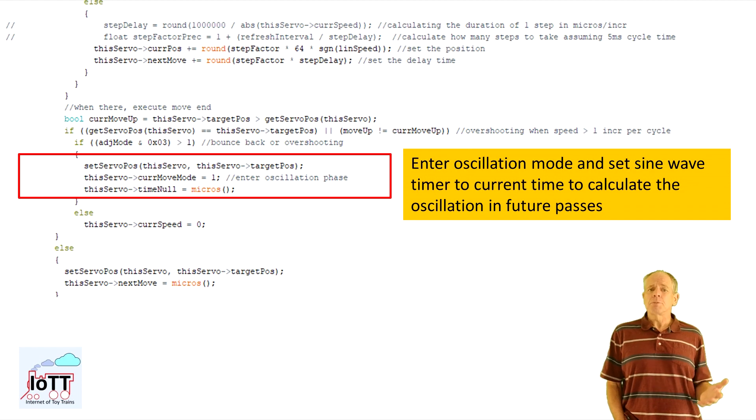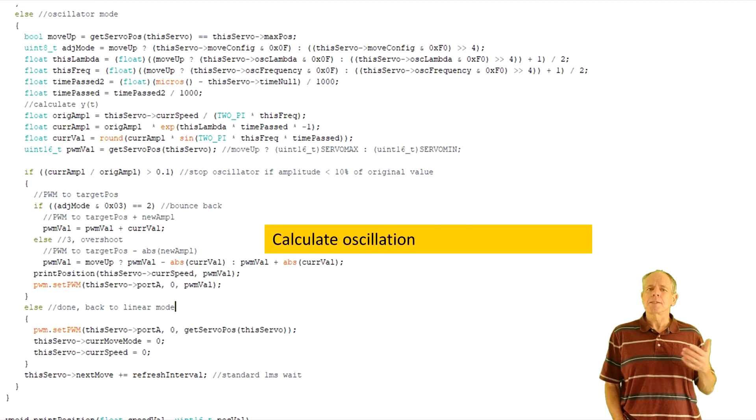So the status machine just repeats the calculation every refresh interval, determining the time since the start of the oscillation, calculating the amplitude and sending the value to the servo. This is repeated until the peak value of the oscillation is down to 10% of the start value. And the start value is calculated based on the servo speed when entering the oscillation and the oscillation frequency.